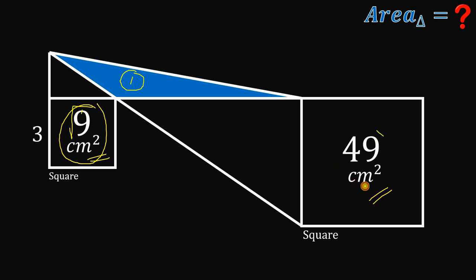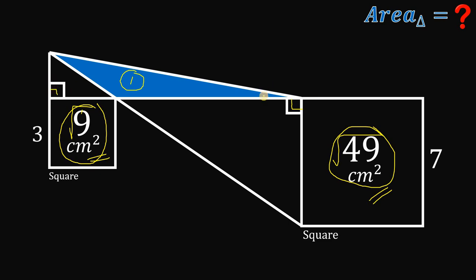The side length of this big square must be equal to the square root of 49, which is equal to 7. Another given is this angle right over here — we can say that this is 90 degrees, because this segment is the extension of the side of the square. Similarly, this angle right over here must also be 90 degrees for the same reason. So we have two right triangles right over here.